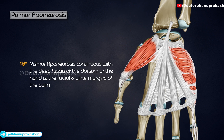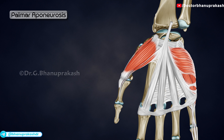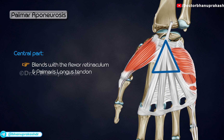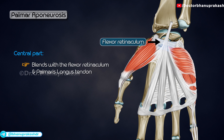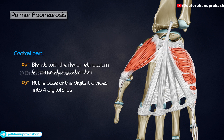It is continuous with the deep fascia of the dorsum of the hand at the radial and ulnar margins of the palm. The central part is triangular, with the apex directed proximally where it blends with the flexor retinaculum and palmaris longus tendon. At the base of the digits, it divides into four digital slips.